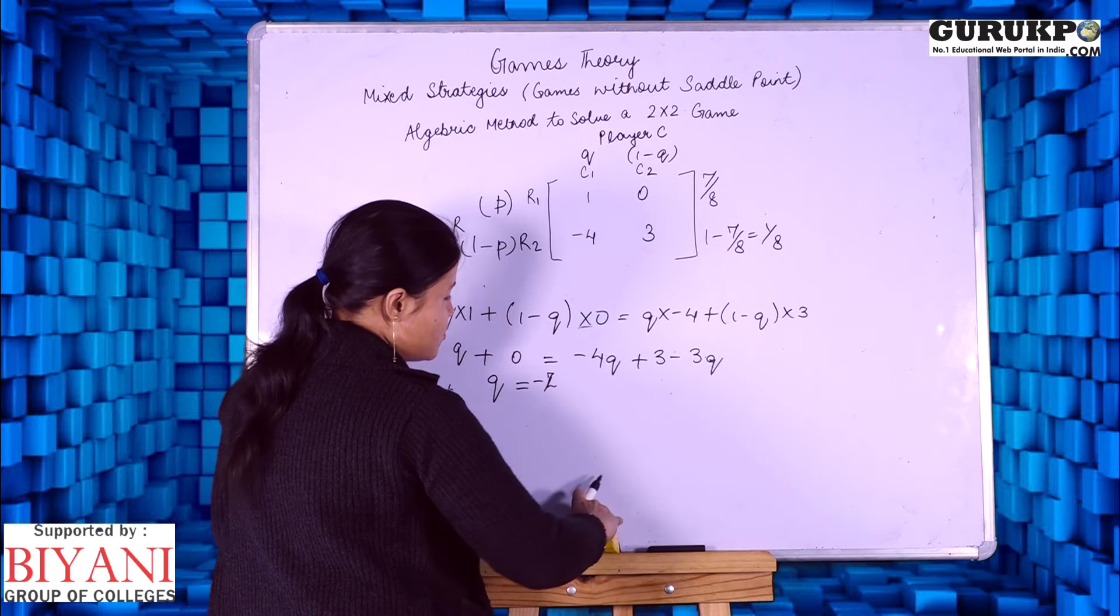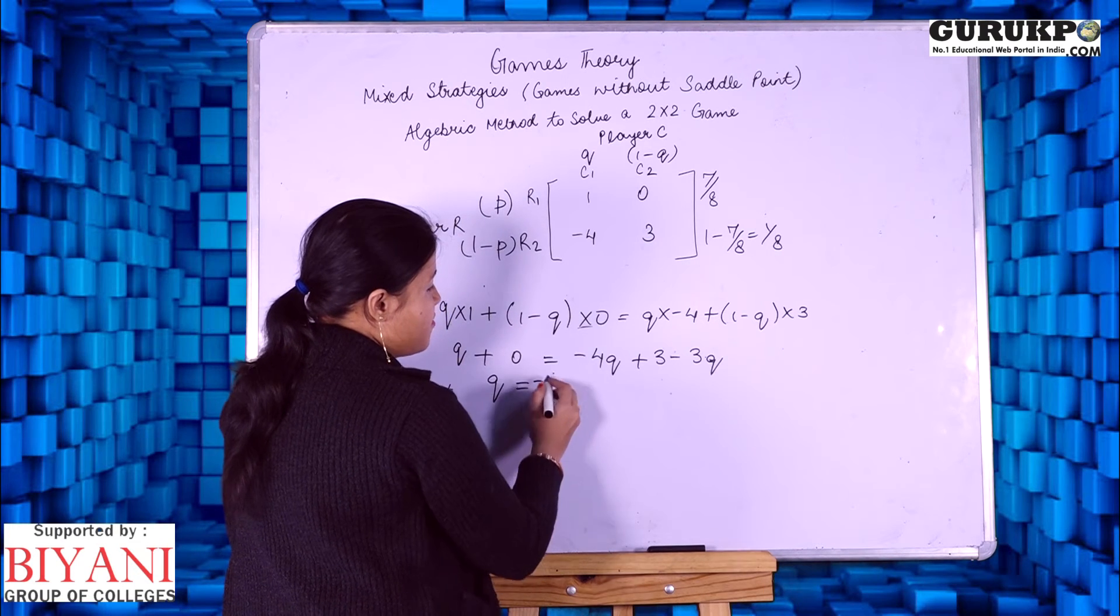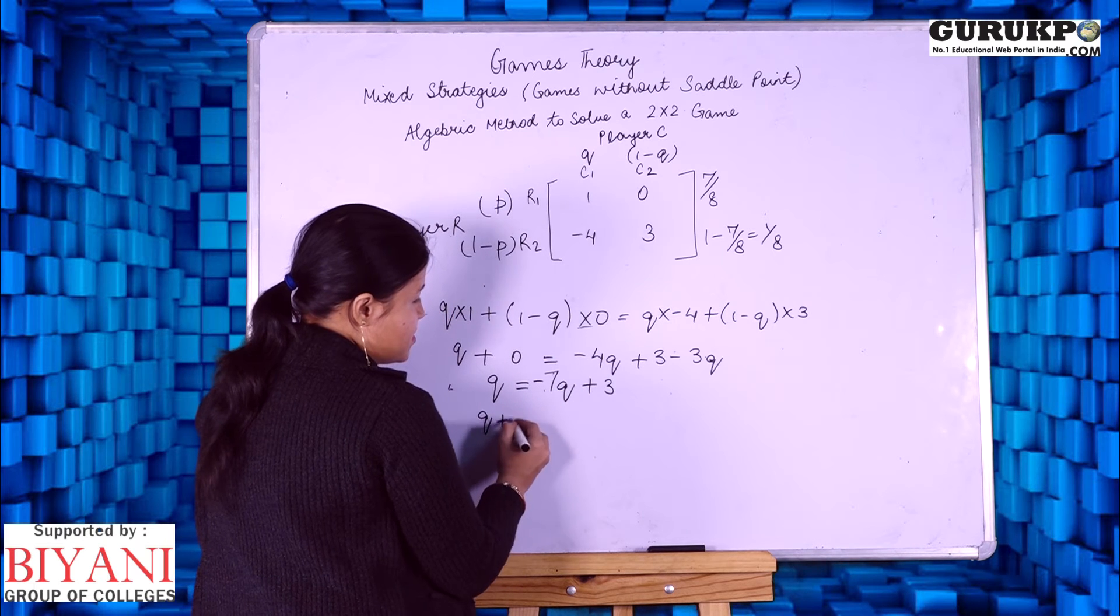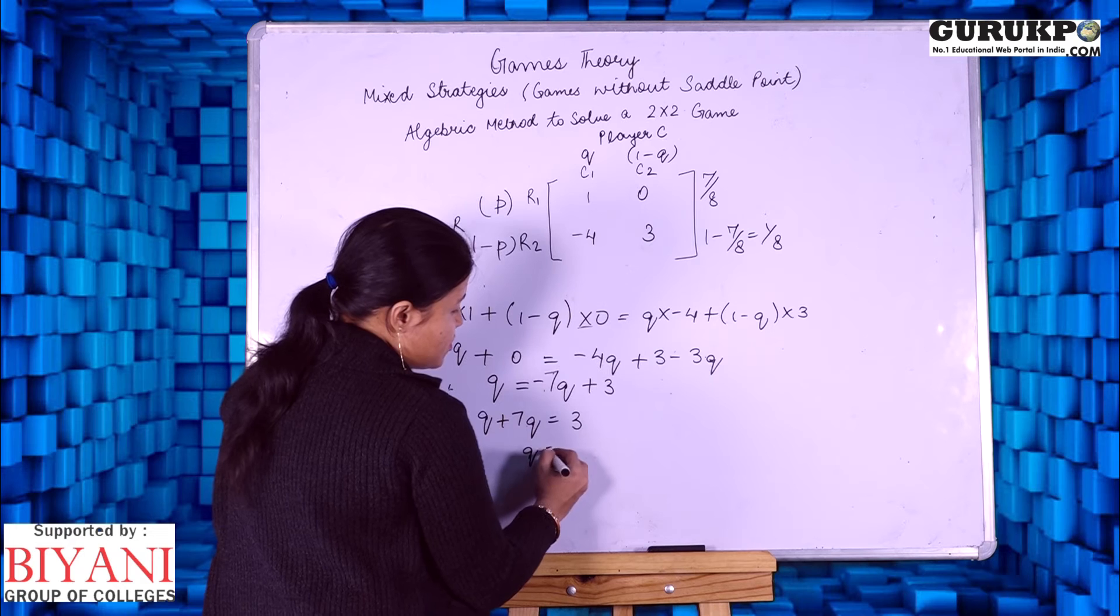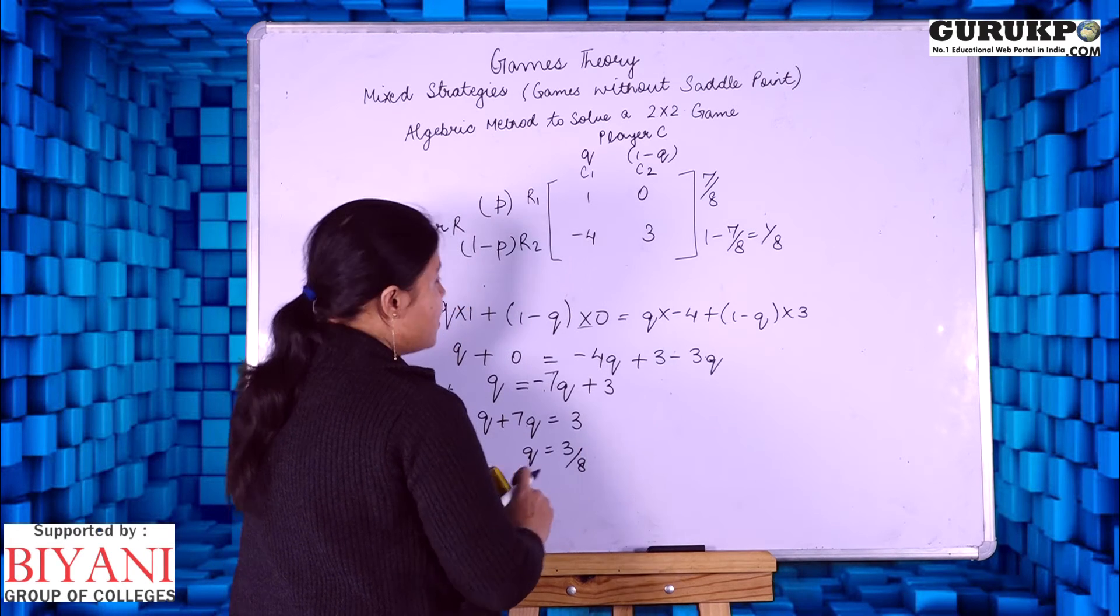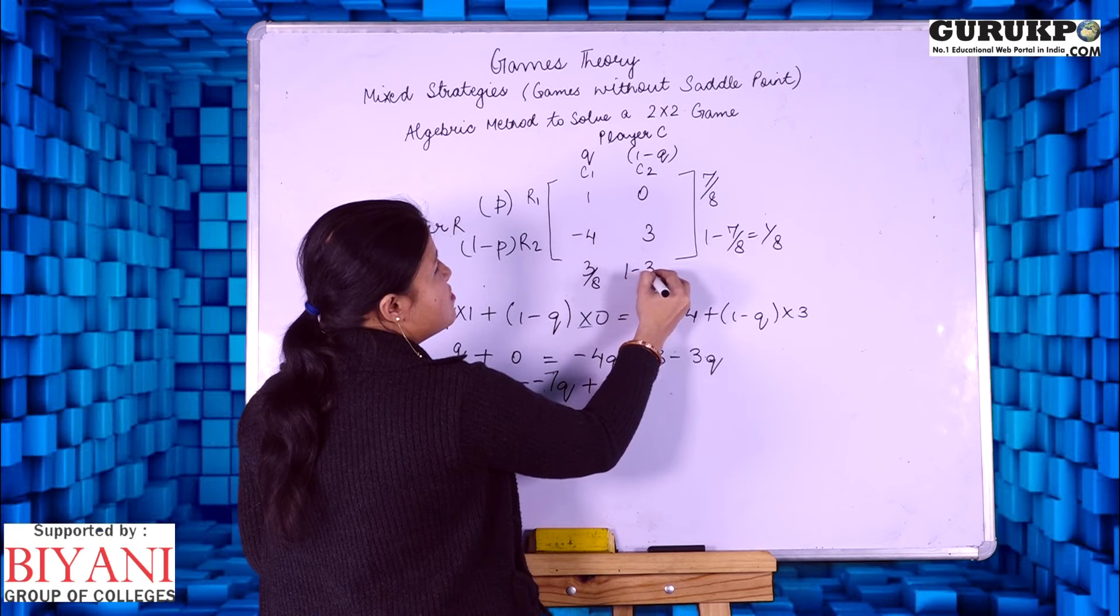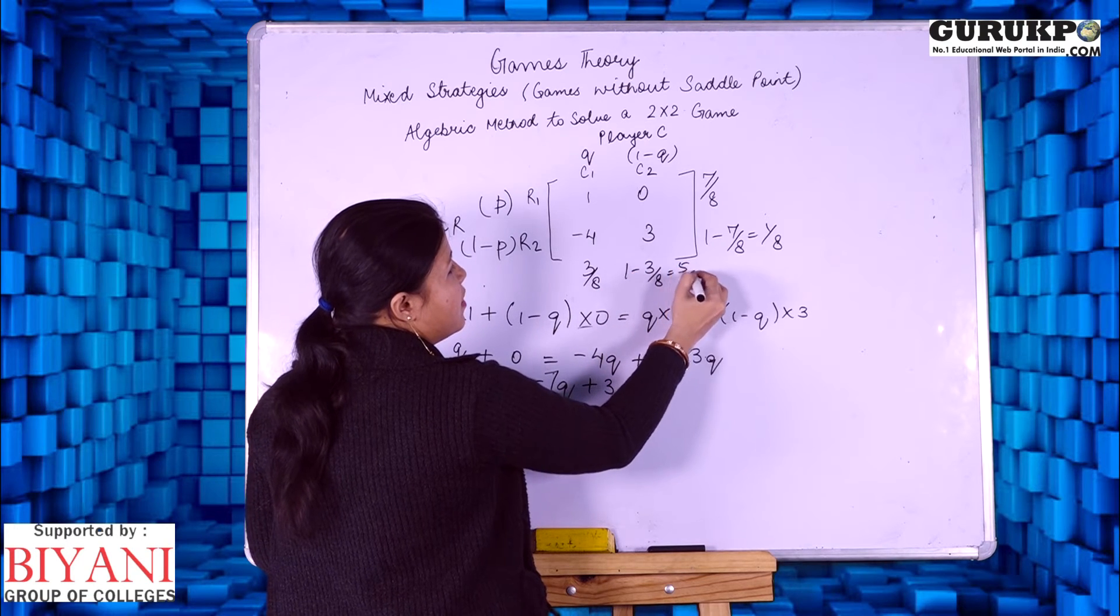It is minus 7Q plus 3. 4Q plus 3Q equals 3Q equals to 3, so Q equals 3 by 7. The value of Q is 3 by 8, so the other strategy is 5 by 8.